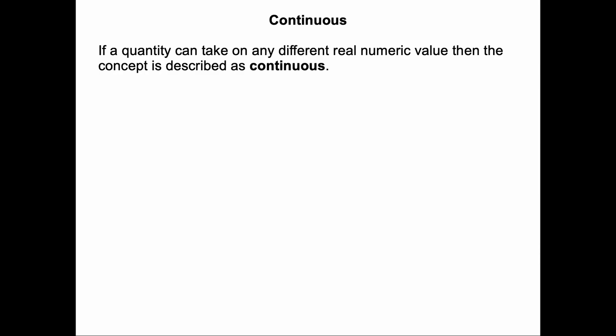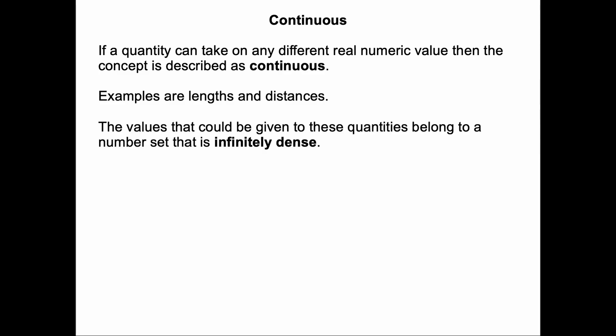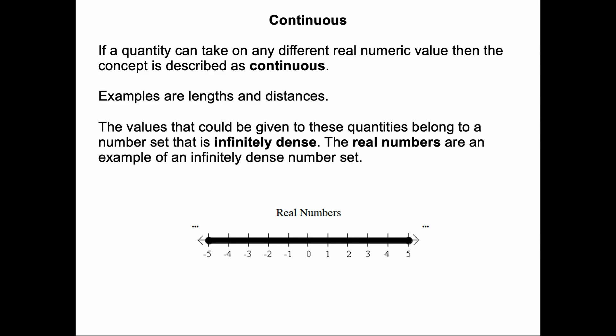The term continuous is used to describe a quantity that can take on any different real numeric value. An example would be lengths and distances. The values that could be given to these quantities belong to a number set that's infinitely dense. And the real numbers are an example of an infinitely dense number set. Between any two points on the real number line is an infinite number of different real numbers.